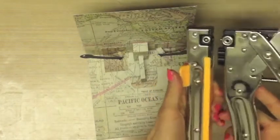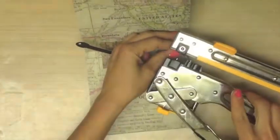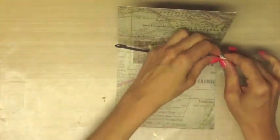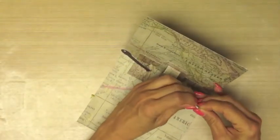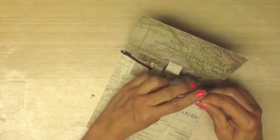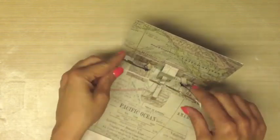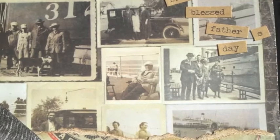And now to attach our banner twine to our poles, we're using the We Are Memory Keepers Big Bite to punch holes. Tie a knot around a little brad and poke the brad through the holes opening up the little brad fingers.